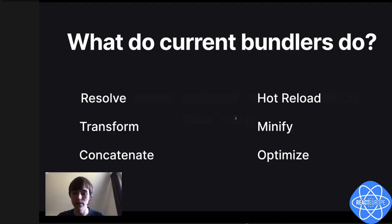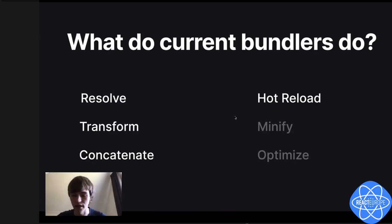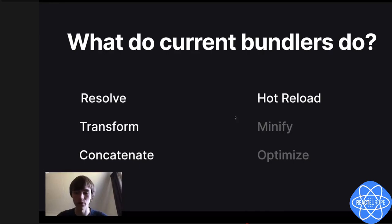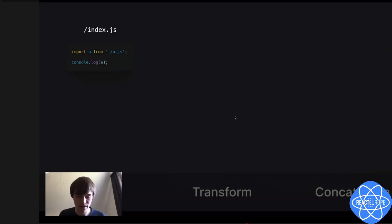Most of the complicated logic is in the last two options — minifying and optimizing. The fact that bundlers have to do tree shaking, bundle splitting, optimized chunking — that is really complicated logic. But if you look at a development bundler, a bundler purely focused on giving a good developer experience, you actually don't have to do those things, and it suddenly simplifies the process. So I want to talk about how a dev bundler works — the three steps: resolve, transform, concatenate.